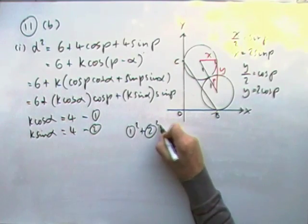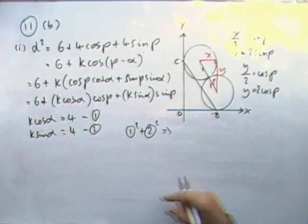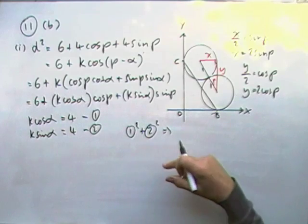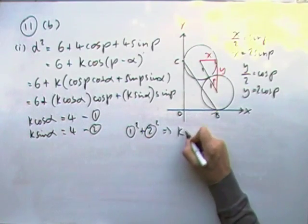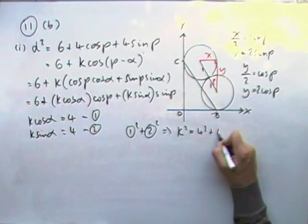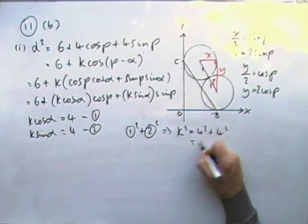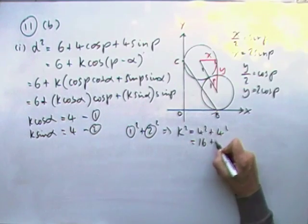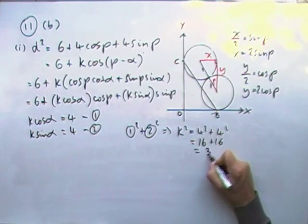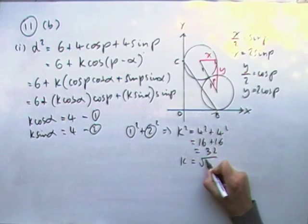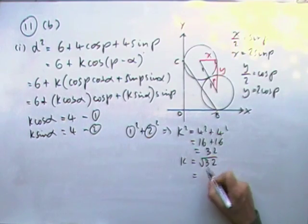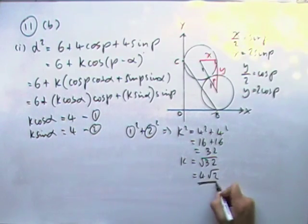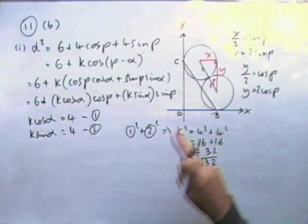If you square them and add them, the cos's and sin's will disappear, but that's the same process. Cos squared, sin squared makes 1. Leaving your K squared is 4 squared plus 4 squared. I could have done that quicker, just by thinking of the root 2 relationship between a 1, 1, root 2 triangle. So that's going to be 16 and 16 is 32. So K is going to be root 32, which turns out it's 4 root 2, which I knew all along.